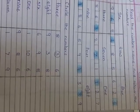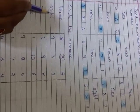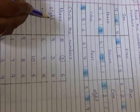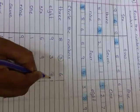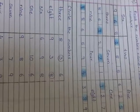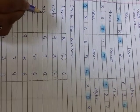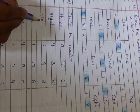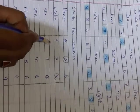Next: E, I, G, H, T — 8. Number 8. Yes. Here. Circle number 8. Next: S, I, X — 6. Where is number 6? Here. Circle.